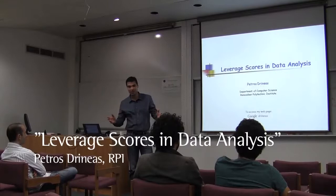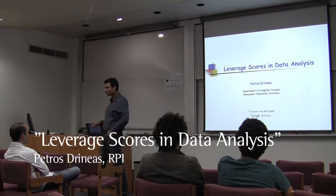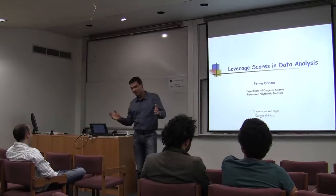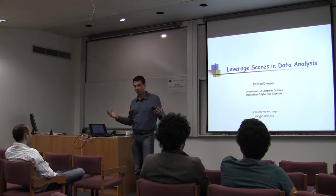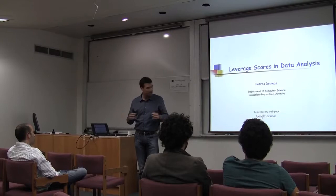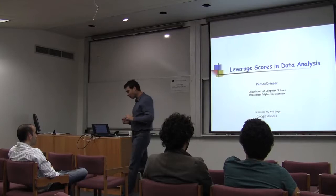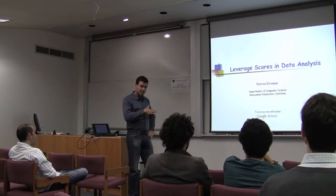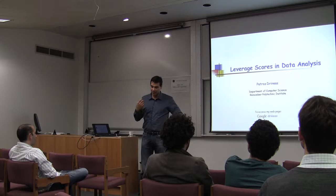Thanks Michael. A lot of the work I'm going to be talking about is actually joint with Michael, so you can get a sense of what Michael has been doing also over the past several years. We're going to talk about one particular side of randomized numerical linear algebra: the notion of leverage scores, and how you can use leverage scores to figure out which rows and columns of a matrix are influential.